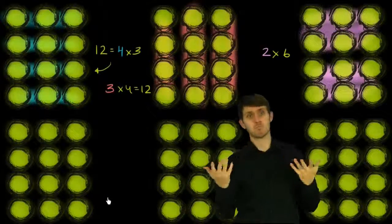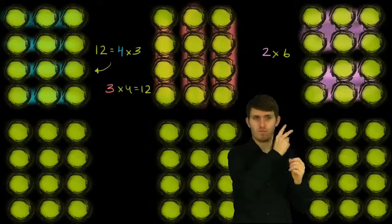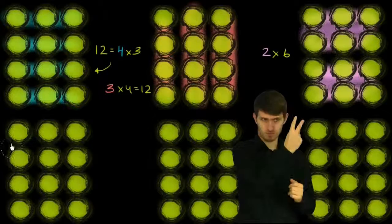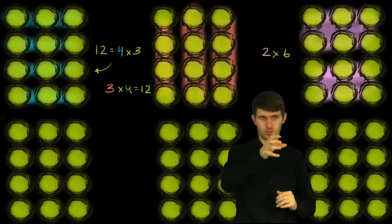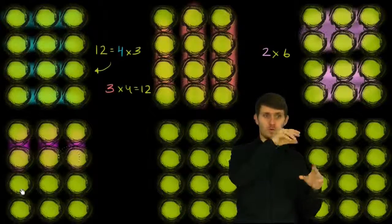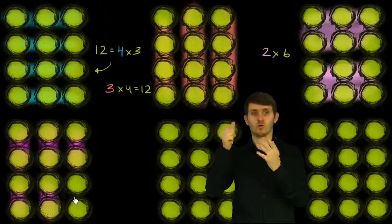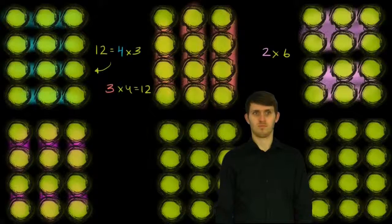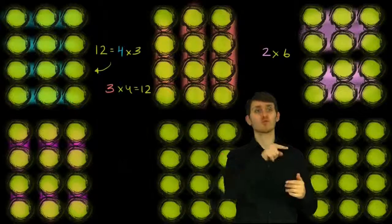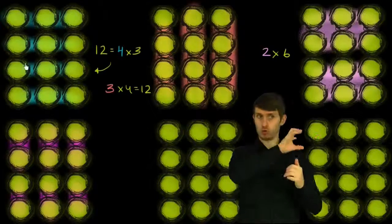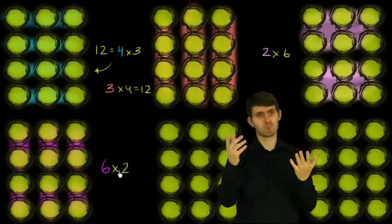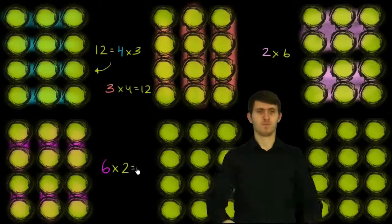What about viewing it as 6 groups of 2? We can draw that out too. We have 1 group of 2, 2 groups of 2, 3 groups of 2, 4 groups of 2, 5 groups of 2, and 6 groups of 2. This is all different ways of writing 12, something equivalent to 12. We could write 6 times 2, 6 groups of 2, is also equal to 12.